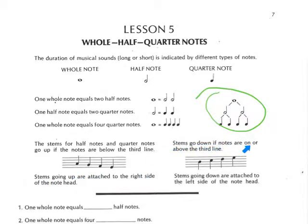The stems go down if the notes are on or above the third line. Notice how these notes are on or above the third line. Therefore, the stems go down, and they go on the left.